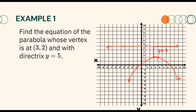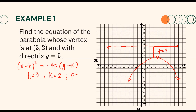Since the parabola opens downward, the standard form of the equation we need to use is (x minus h)² equals negative 4p(y minus k). Substituting the values of h, k, and p: since our vertex is at (3, 2), h equals 3 and k equals 2, and p equals 3. When we substitute these values, we will have (x minus 3)² equals negative 4 times 3 times (y minus 2).